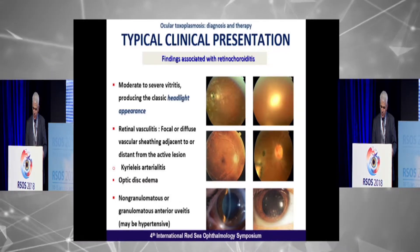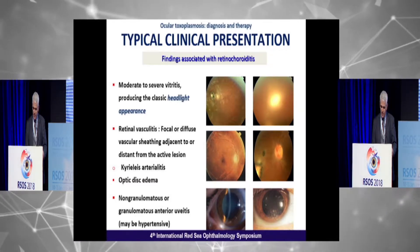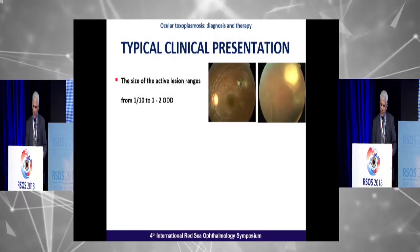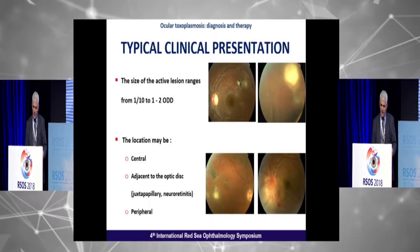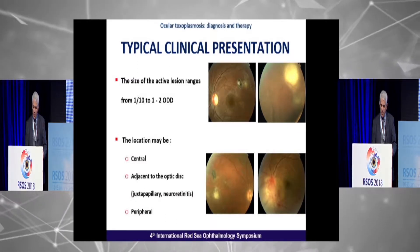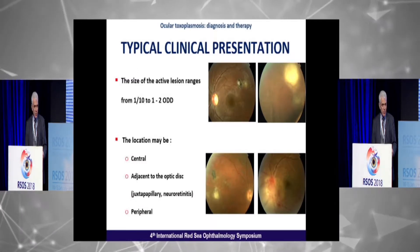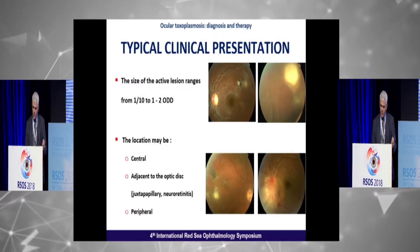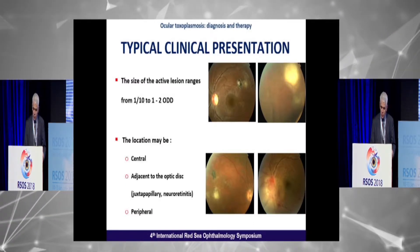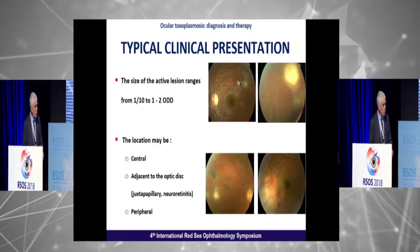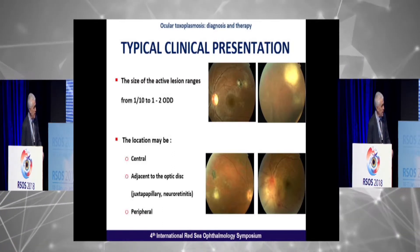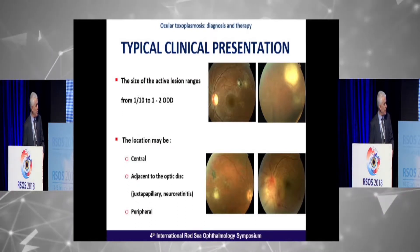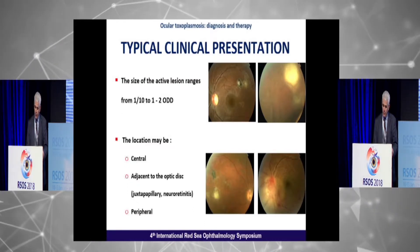Granulomatous anterior uveitis may be hypertensive in nature. The size of the active lesion is variable, and location may be central retinochoroiditis, adjacent to the optic disc producing neuroretinitis or juxtapapillary retinochoroiditis, or peripheral.